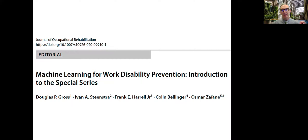I mentioned this special series in the area of work disability prevention. I got together to write an introduction to the series with machine learning scientists Colin and Osmer, and traditional biostatisticians Yvonne and Frank Harrell. We thought it was very important to create a stable foundation for everyone of what machine learning is. We provided definitions of artificial intelligence, machine learning, deep learning, big data — all these buzzwords you hear nowadays — and then we compared machine learning to traditional statistics: how are they similar, how are they different, and is machine learning truly better than statistics or just different?